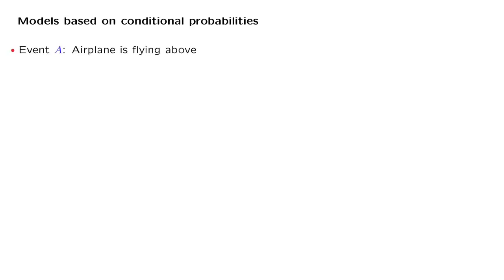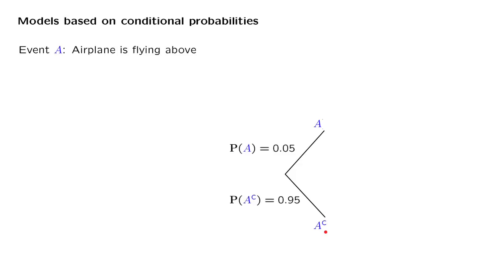So we are looking up in the sky, and either there's an airplane flying up there or not. Let us call event A the event that an airplane is indeed flying up there. We have two possibilities: either event A occurs, or the complement of A occurs, in which case nothing is flying up there. Through prior experience or some other knowledge, we know that the probability that something is indeed flying up there is 5%, and with probability 95%, nothing is flying.